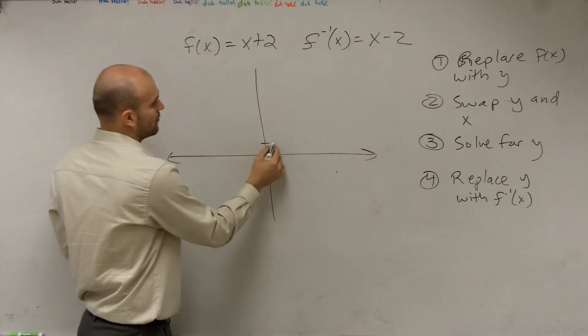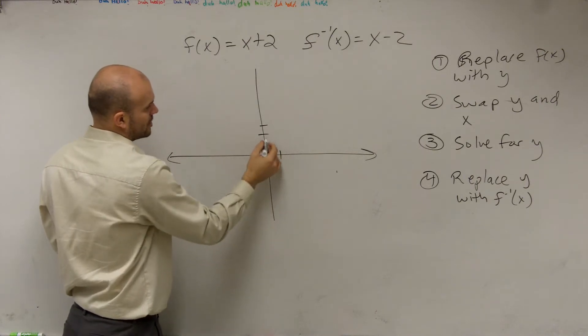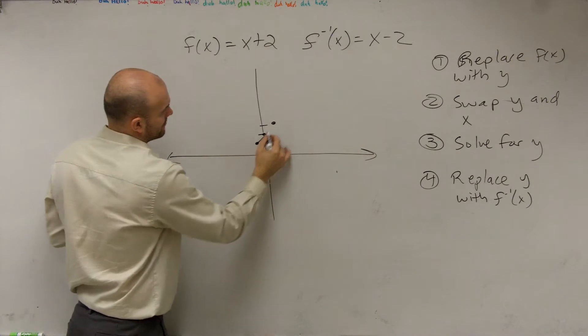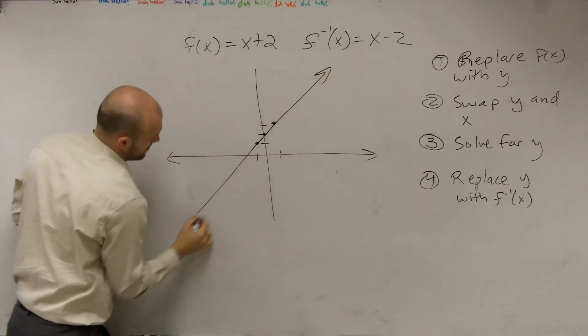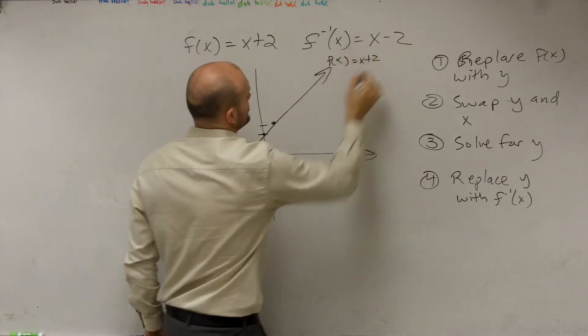So to graph these real quick, one, two, and then up one, over one, left one, down one. So we go up two, our next point would be like there, next point there. That is your function, f of x equals x plus 2.